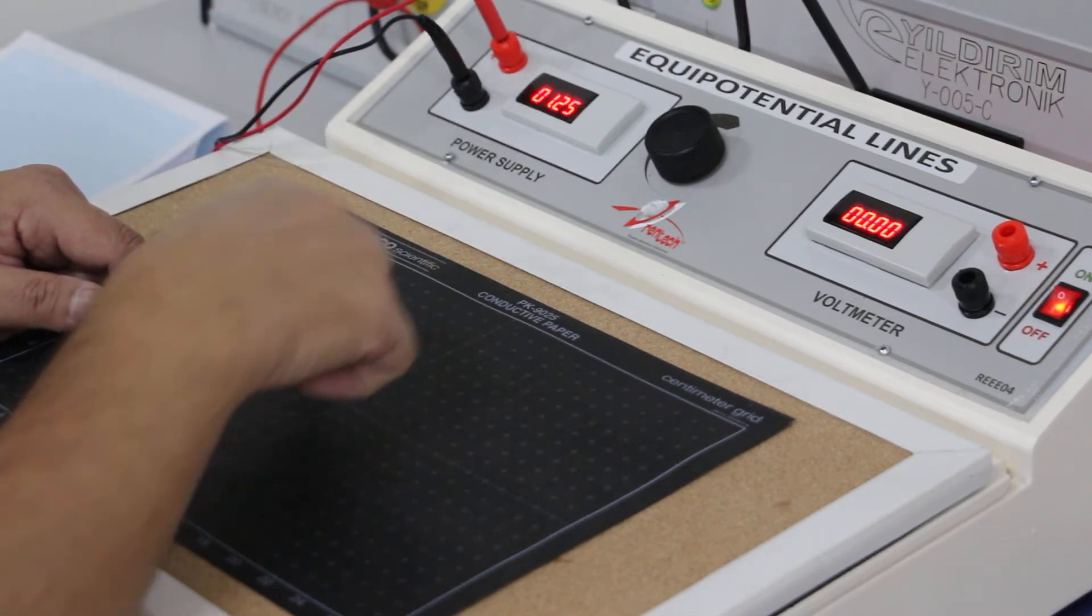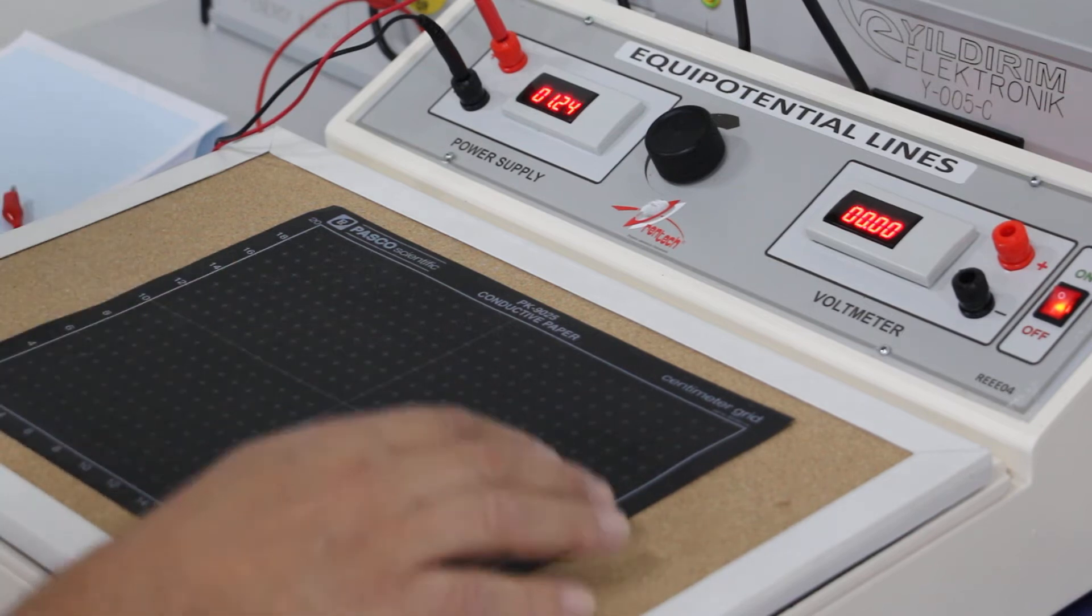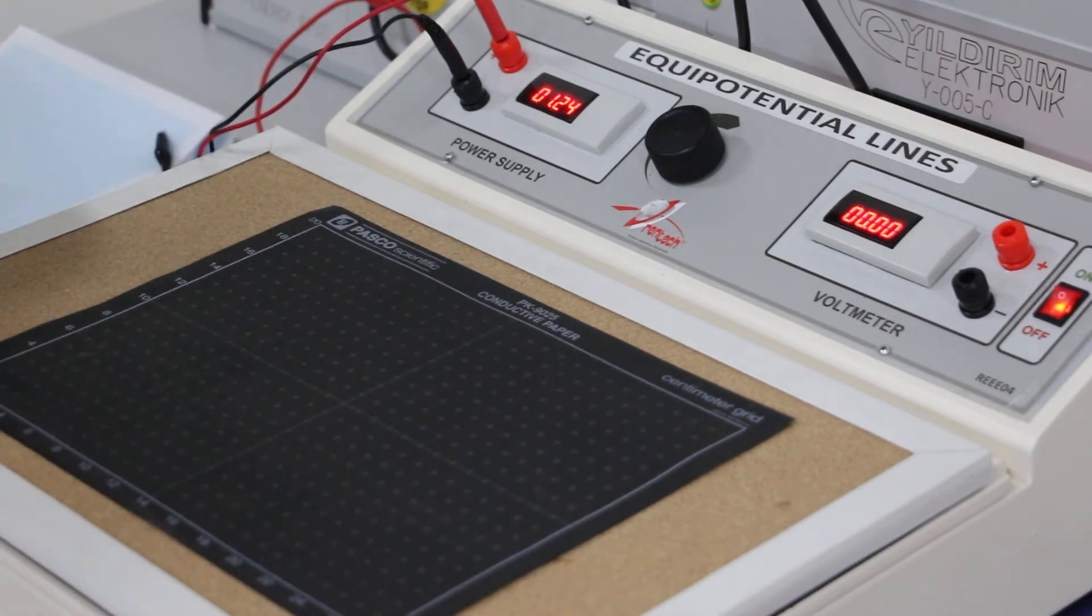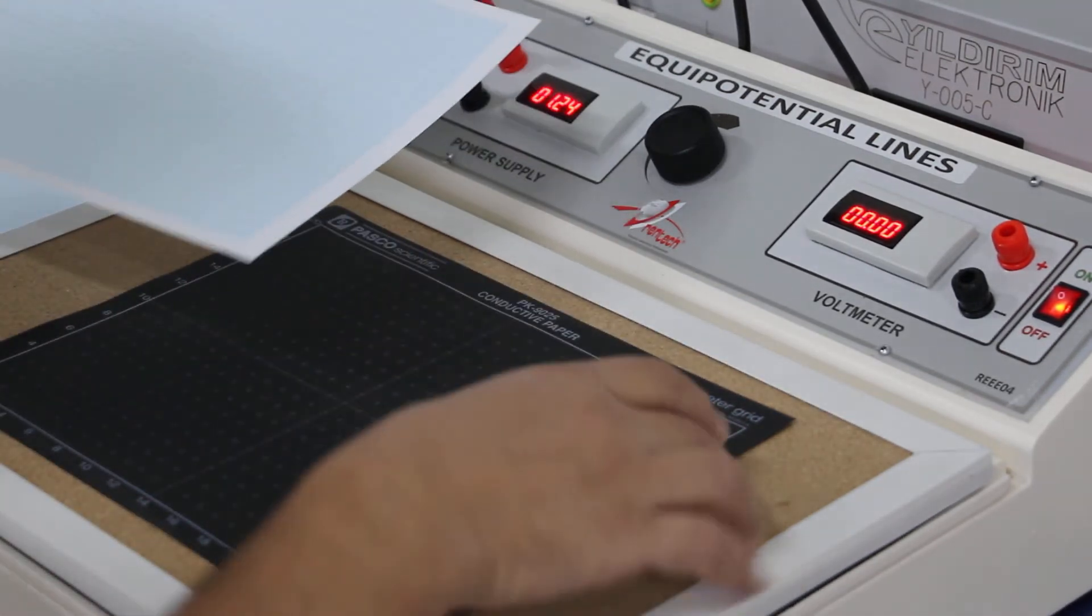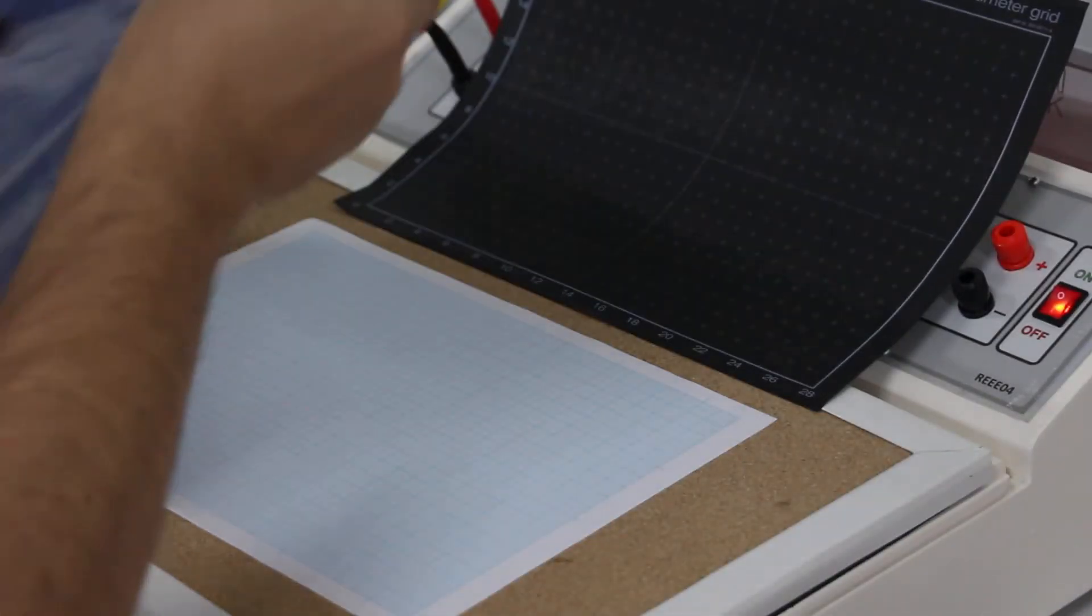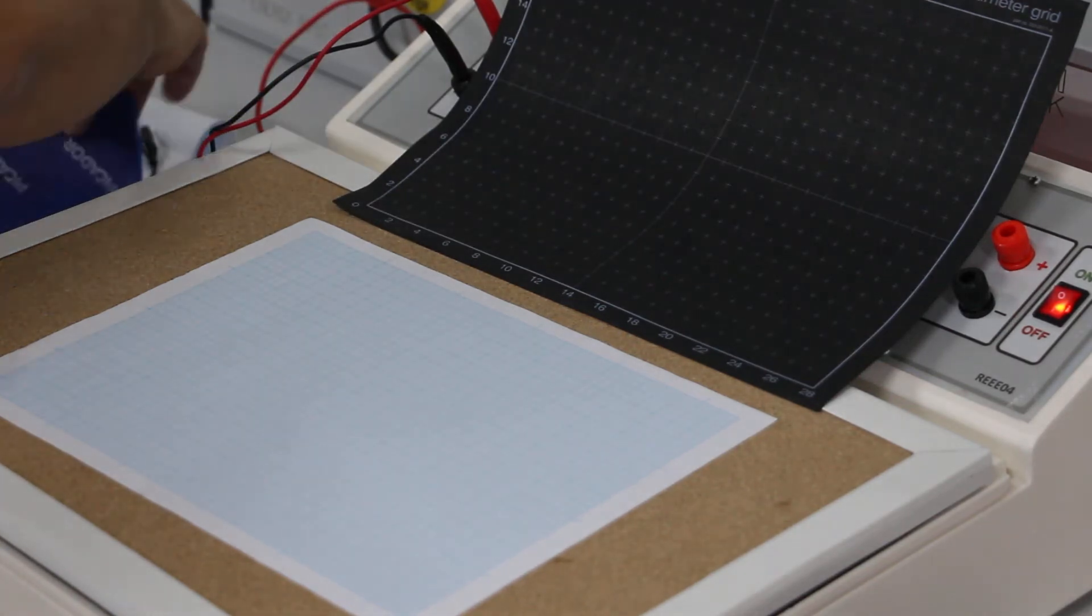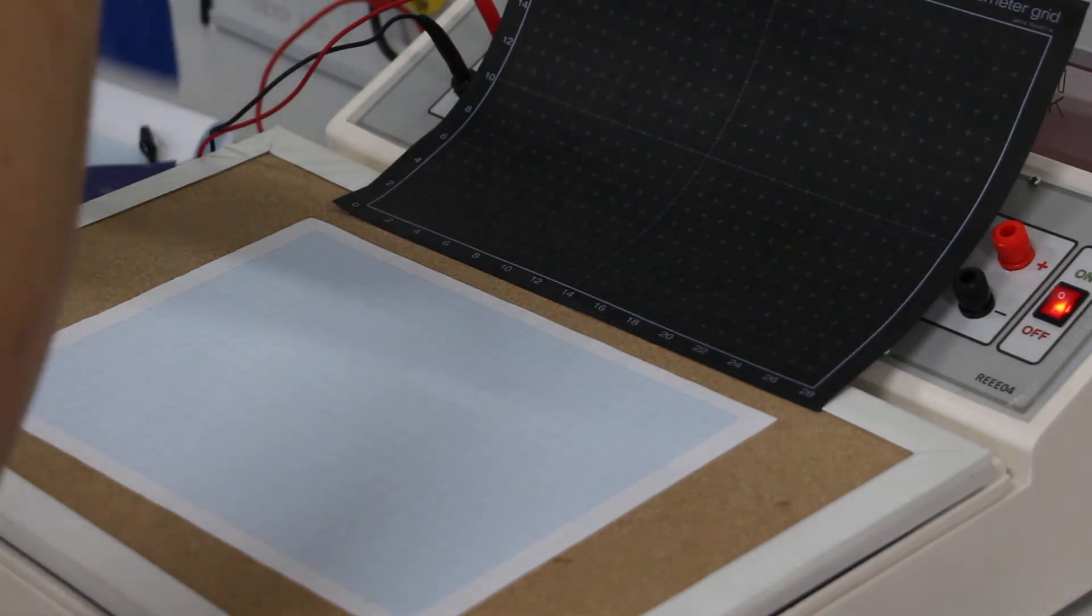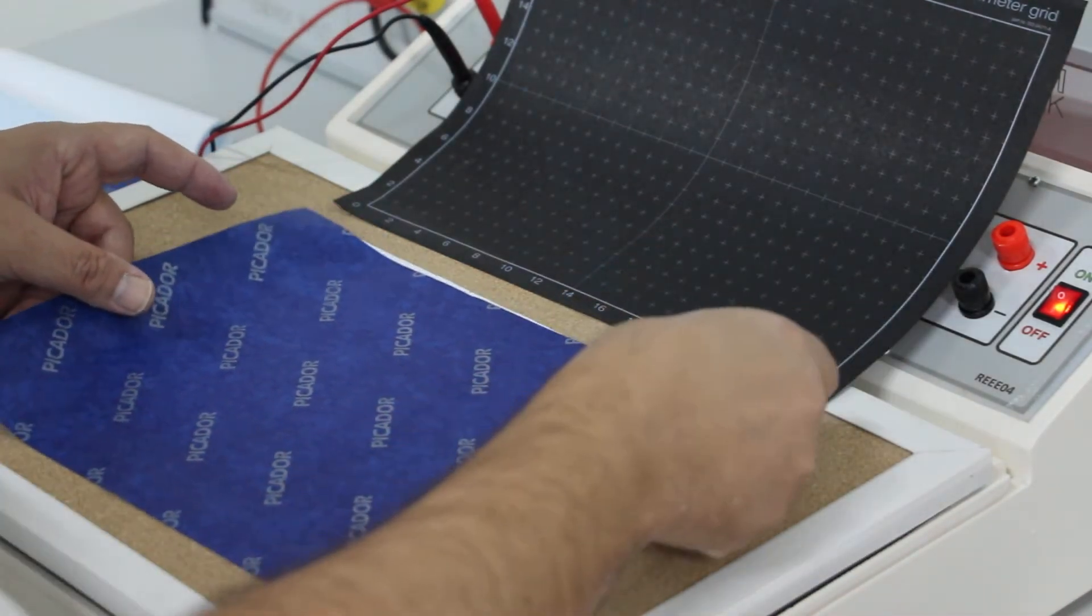The same voltage we must have. And we will draw the sheet on a graph paper. We will put a graph paper under the conductive paper and a copy paper on it to pass the dots to the graphic paper.